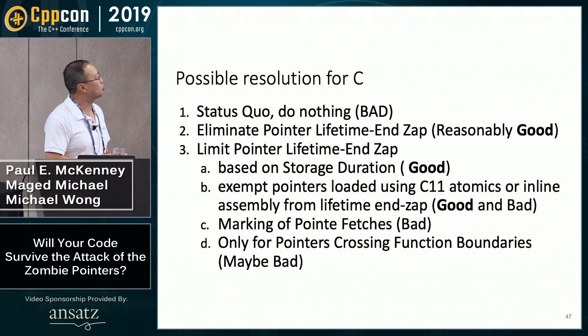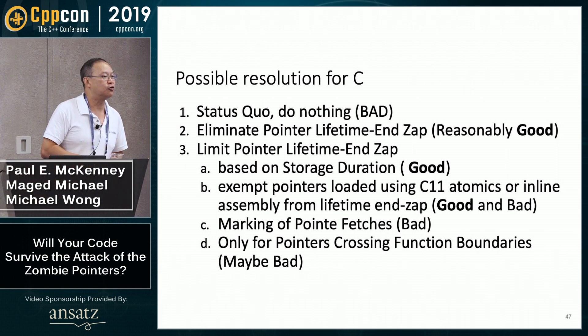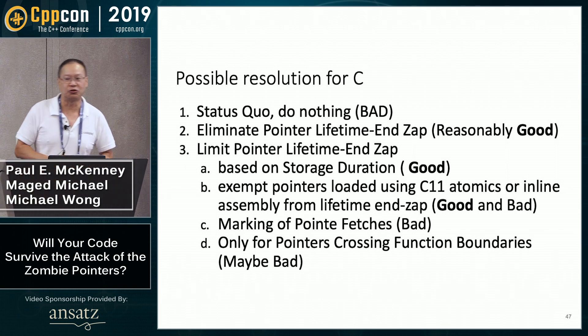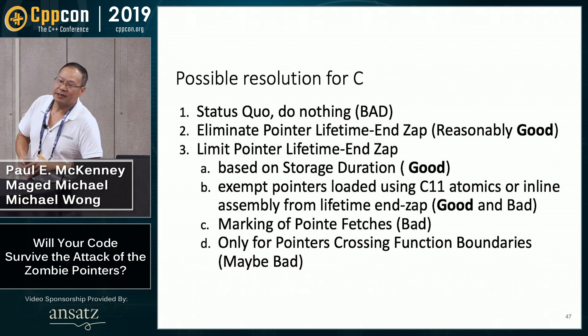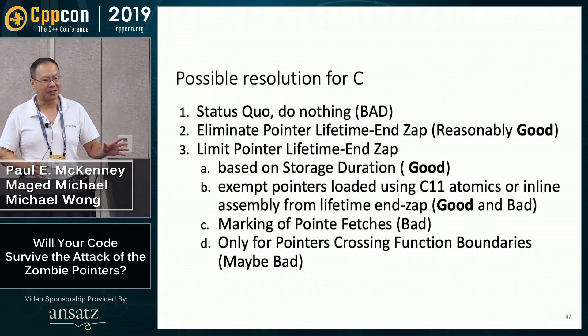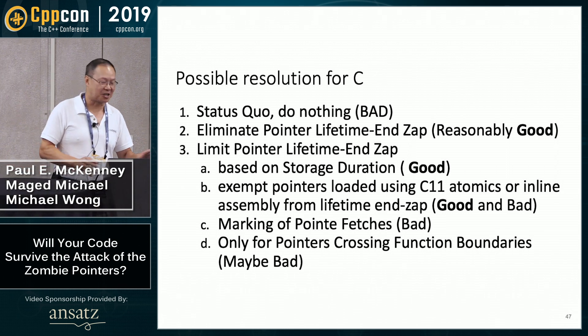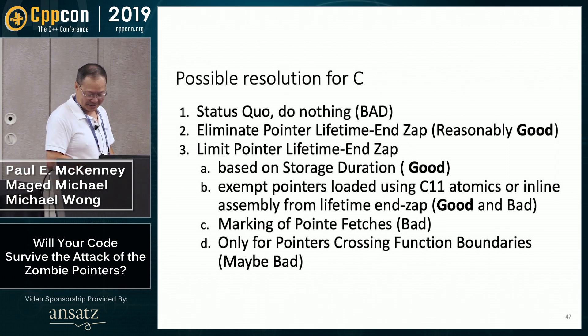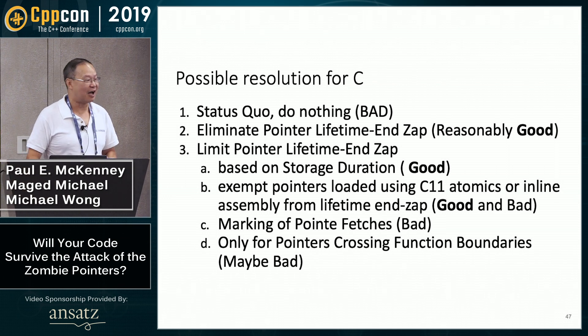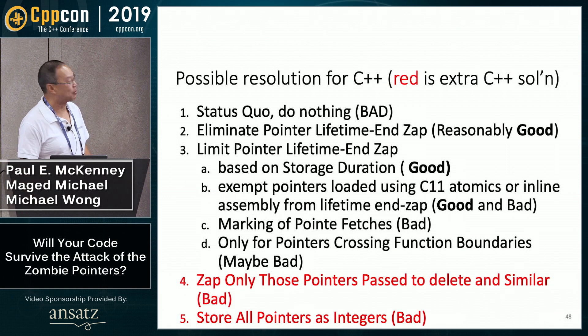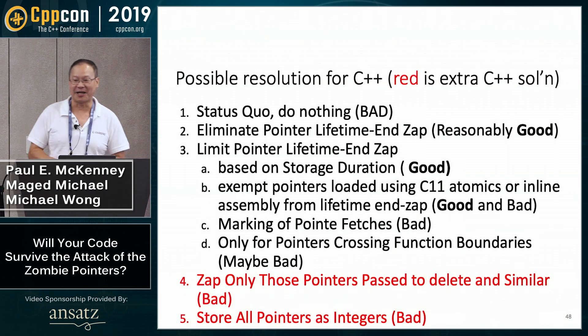Additionally, if a pair of pointers may alias, the simplest code would free one, check whether the pointers are equal, and if not, free the other. And finally, a loop freeing elements of a linked list might check the just-freed pointer against null as the loop termination condition. It seems we need to solve this problem whether you're interested in concurrency or single-threaded cases.